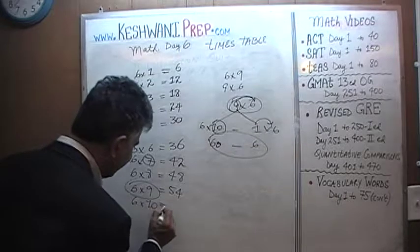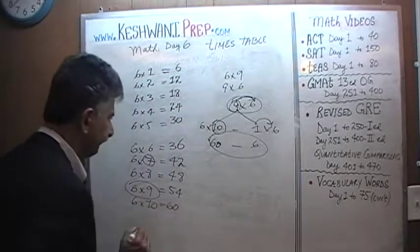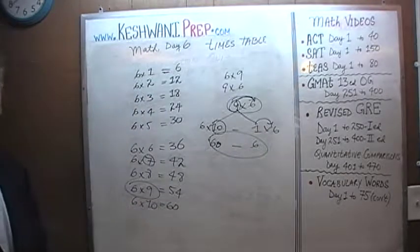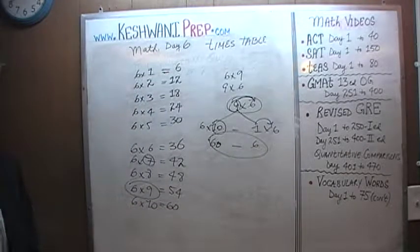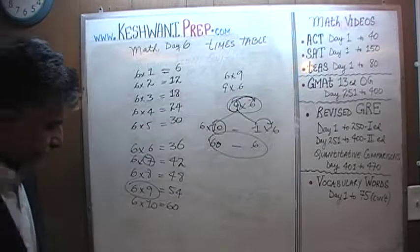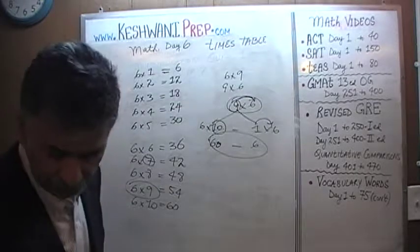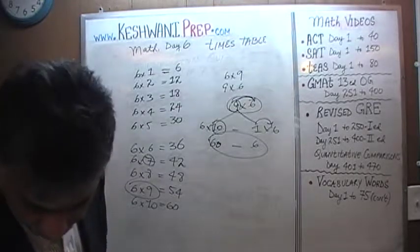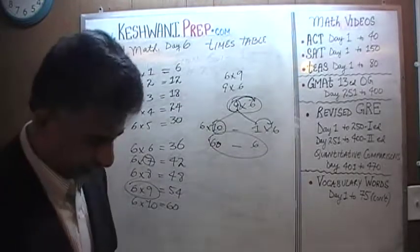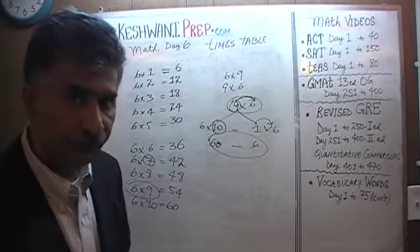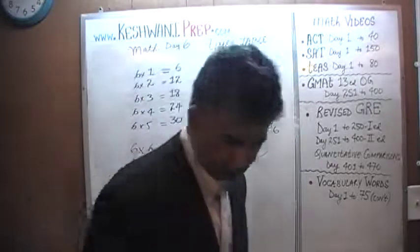And finally, ten sixes are sixty. That's all — that's the table of six. I'll see you tomorrow. Bye now.